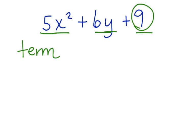There are terms that have variables and exponents. There are terms that just have variables, and there are just numbers. When we have a number like this, it's called a constant.